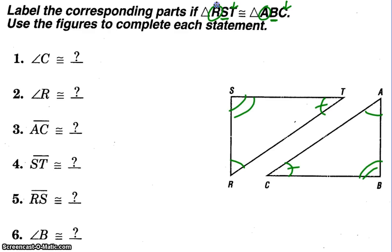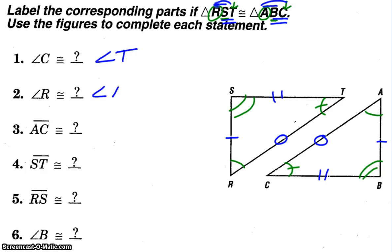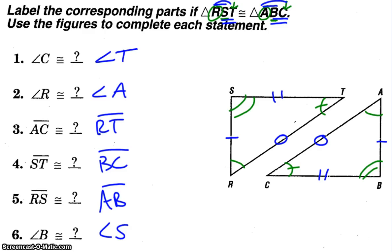That's also true when we talk about the segments, so RS and AB are congruent, ST and BC are congruent, and then the first and third letters would also be congruent. We don't always have to draw a diagram — we can just look at the letters listed to identify corresponding parts. So angle C would be congruent to angle T, and angle R would be congruent to angle A. Go ahead and take a second to finish listing the corresponding parts. Those would be the congruent statements we can make based on the corresponding parts.